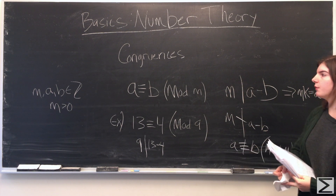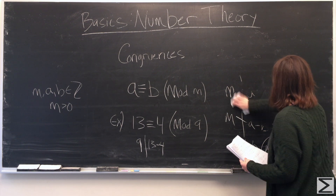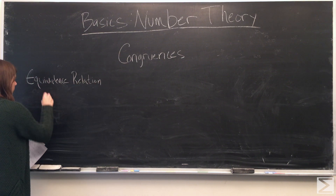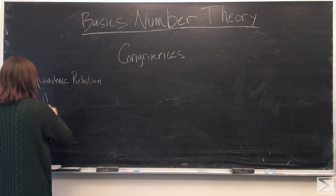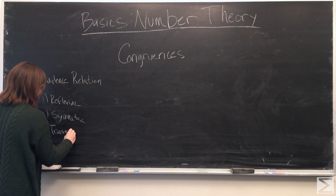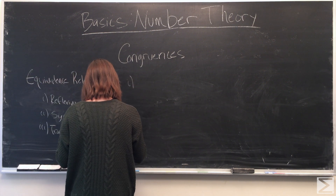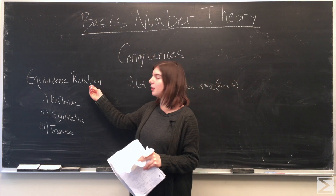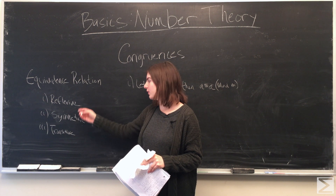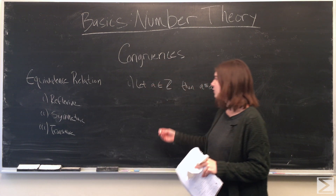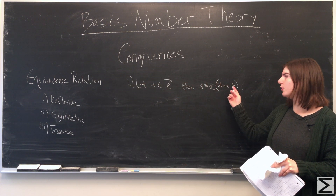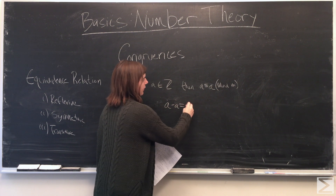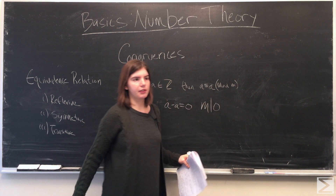We're going to go over a few of the basic properties of congruences. The congruence relation is an equivalence relation, which means it satisfies three conditions: it's reflexive, it's symmetric, and it's transitive. Reflexive just says that if a is a positive integer, then a is congruent to a modulo m. The proof is simply that a minus a is 0, and m divides 0, so this holds true.